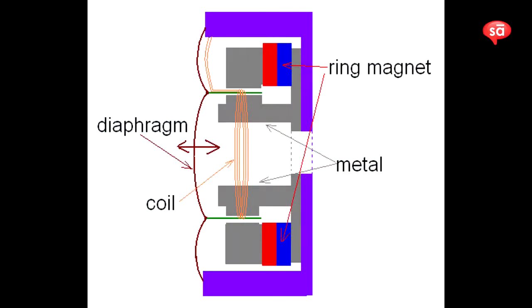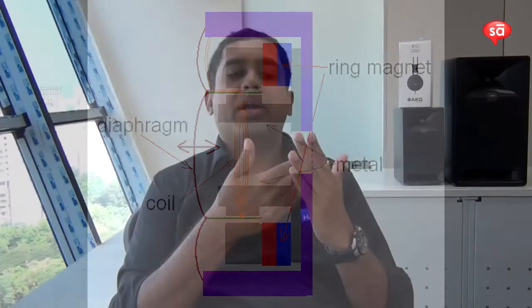How does that relate to reality — how does it actually matter to us while using them? A headphone basically has a diaphragm inside, which is connected to a coil made out of copper wire, suspended in a fixed magnet. When current flows through that coil, it produces an electromagnetic field, moves according to the current, and produces sound.